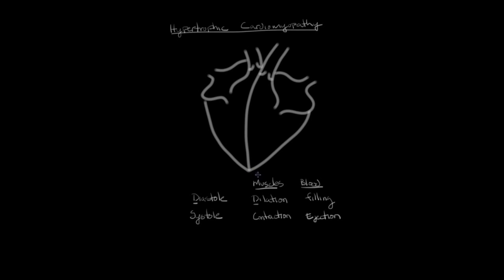Looking at this diagram, think of this heart as sitting inside someone you're looking at. On the left side of the diagram is their right heart, and on the right side is their left heart. Starting in the right atrium, this blood is coming from the body. Over in the left atrium, blood is pink because it's been freshly oxygenated coming from the lungs.